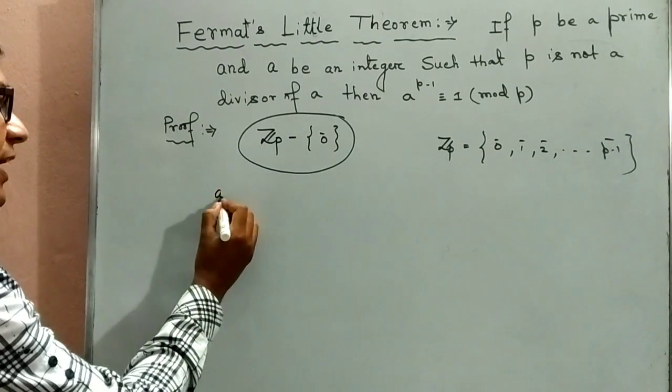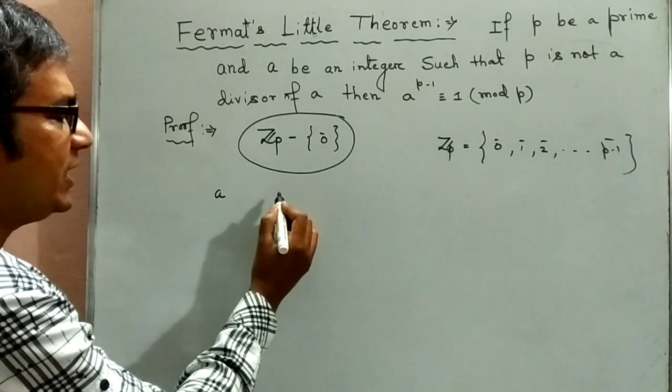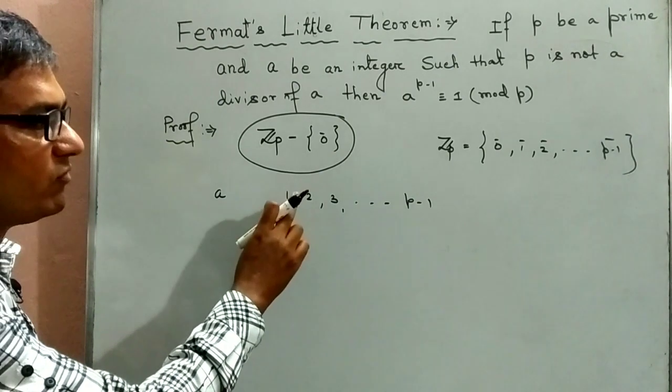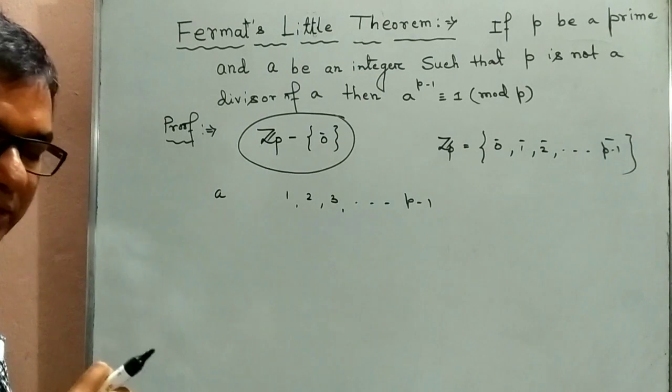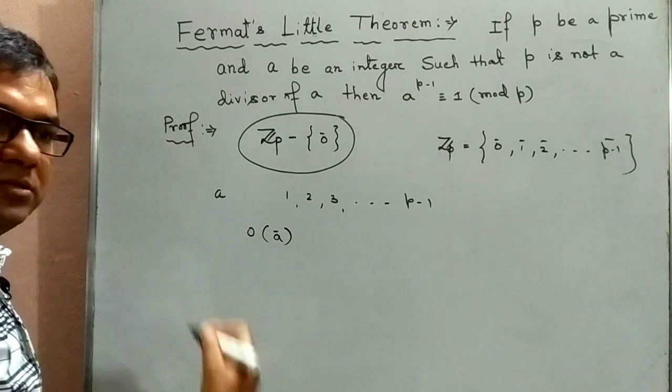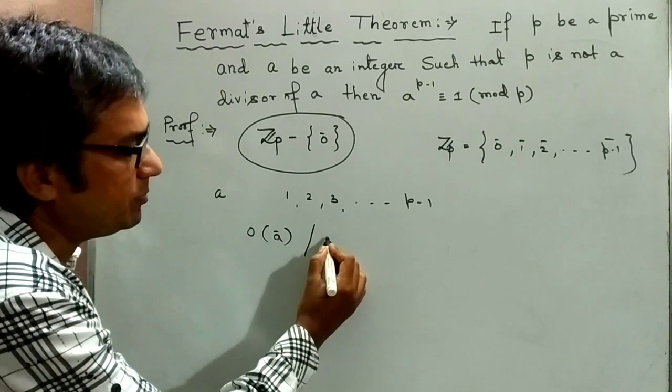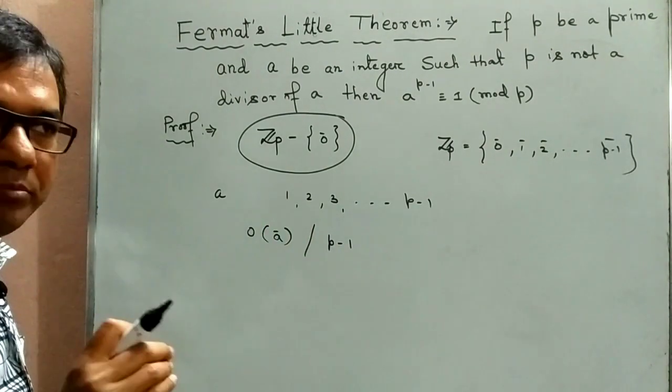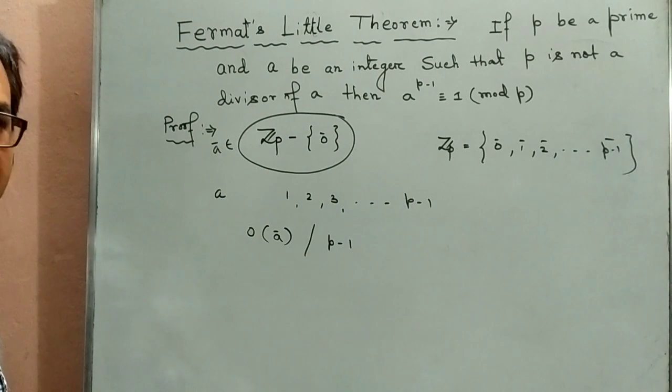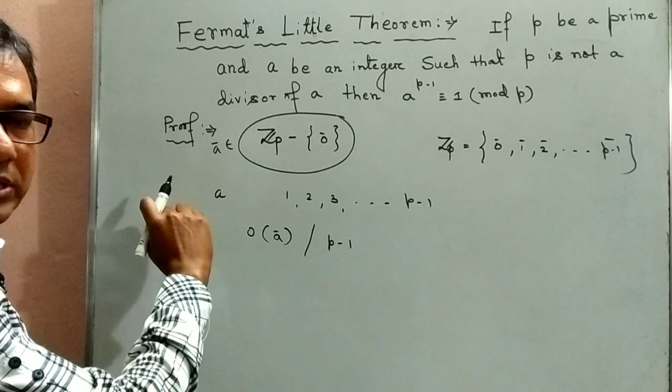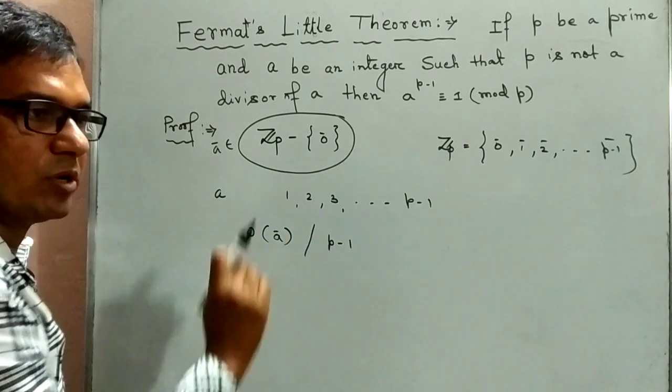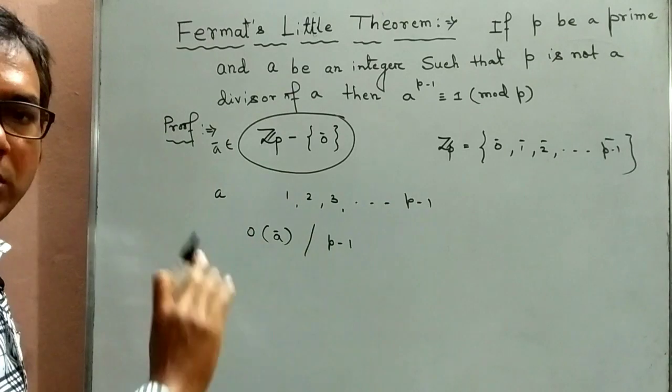Now, if a is any one of 1, 2, 3 to p minus 1, then order of a class must divide p minus 1. Because a class belongs to Zp minus 0. And the order of this group is p minus 1 elements. So any element of the group must divide the order of the group.